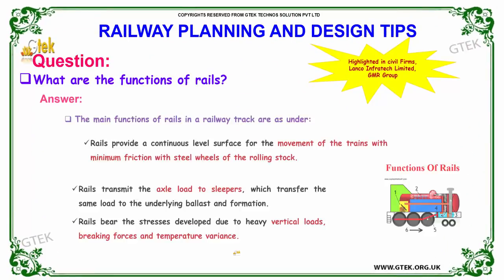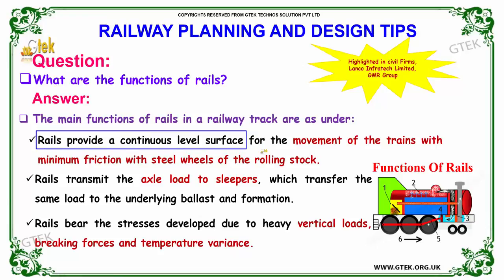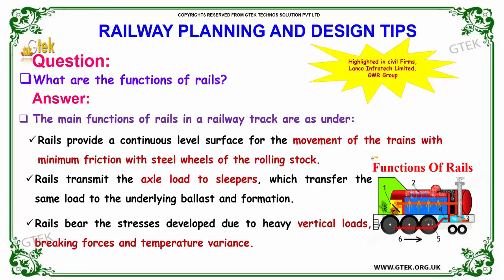The next question: what are the functions of rails? The first and foremost function of rails in a railway track is to provide a continuous level surface for the movement of trains with minimum friction with the steel wheels of the rolling stock.